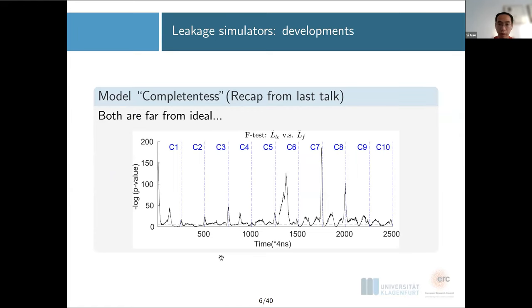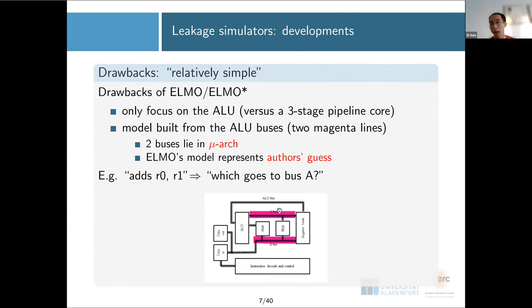A bit of recap from my last talk: in general, if we take the subset of both MAPS and ELMO's leakage model and verify in our completeness test, you may notice that almost every single cycle we fail the test, which means almost every single cycle there is something missing in your leakage model. And why is that? Mainly because our leakage models are always relatively simple.